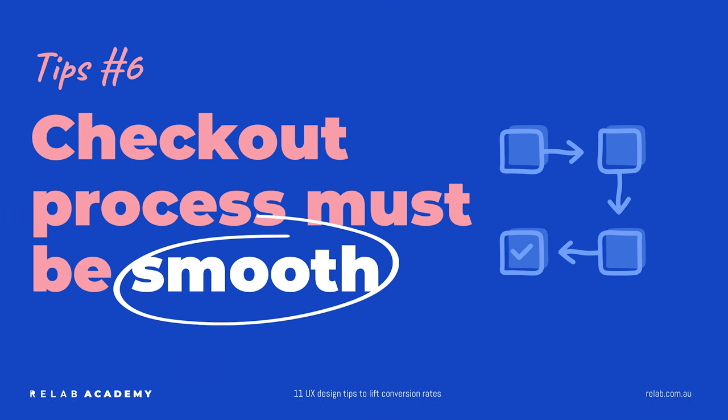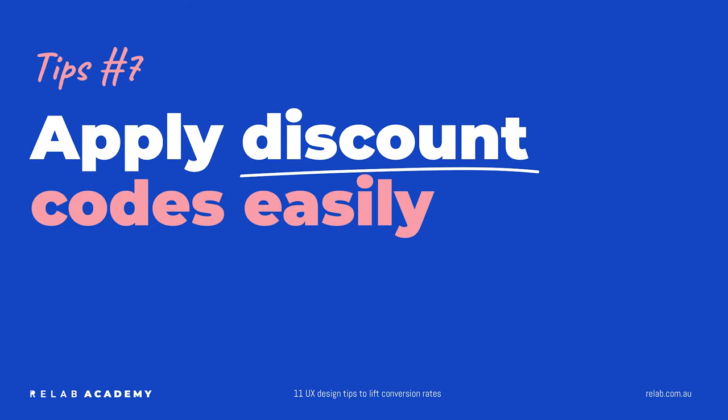Number six, continuing the checkout theme, is to make the process really smooth. Whether it's filling in shipping details, personal details, or credit card details — make it as seamless as possible. The best converting checkout pages are very simple: they strip down distractions, change the header, menu, and footer, and keep users focused on completing the purchase — just like being at a counter in a retail store making that one-way flow to buy and leave with a great experience.